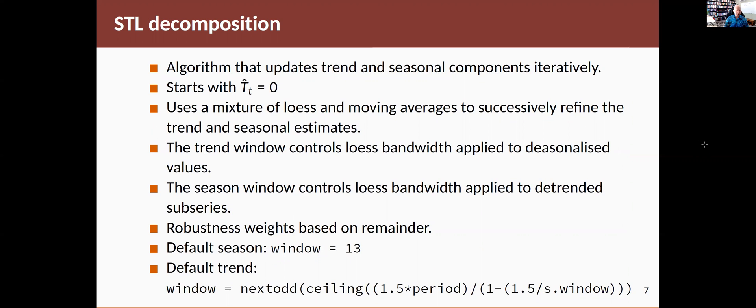So it starts off by saying, well, let's suppose there's no trend. And then it will try to estimate the seasonality by doing something a little bit like what happens in classical decomposition to estimate those seasonal patterns.